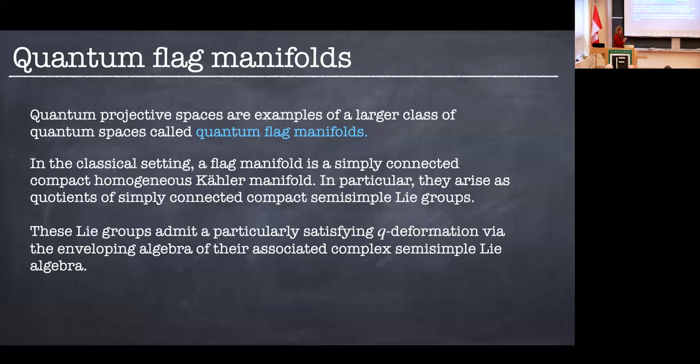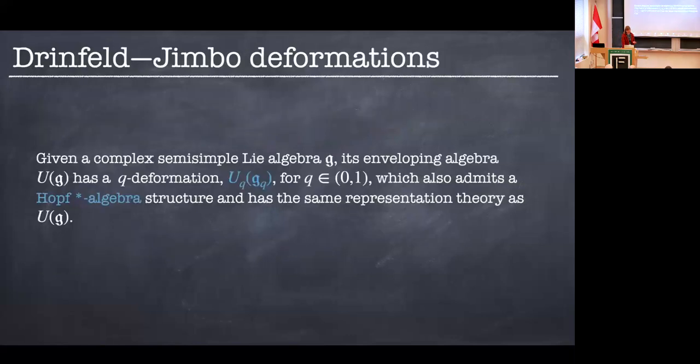So quantum projective spaces, these are examples of a larger class of quantum spaces called the quantum flag manifolds. So these are what we're interested in. In the classical setting, a flag manifold is a simply connected, compact, homogeneous Kähler manifold. And in particular, they arise as quotients of simply connected, compact, semi-simple Lie groups. And this audience will actually probably know what Kähler manifolds are. When I talk to the C-Star algebraists, they want to ask me what they are. And then I have to tell them that I'm actually contractually obliged by my co-authors to tell you this fact, and I don't know so much about it.